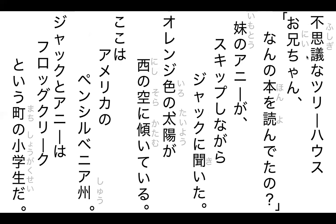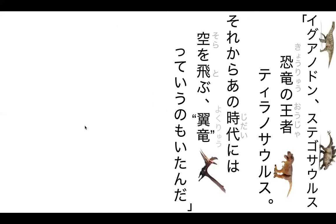Next line: おにいちゃん — which is just 'big brother' — のんの ほん よんでいたの. So: 'What book are you reading right now?' The reason it's よんでいた rather than the other form is just because it's been slurred a bit to be more casual, since he's talking to his little sister.